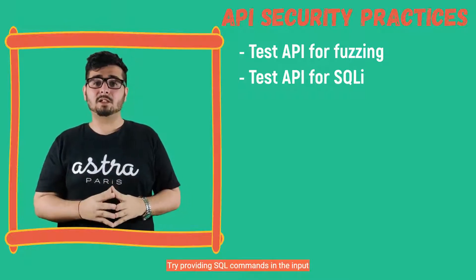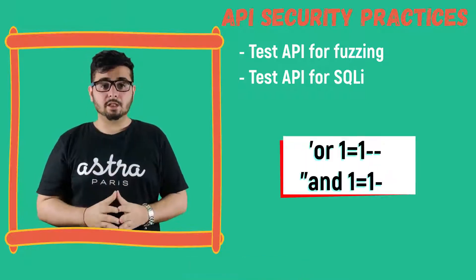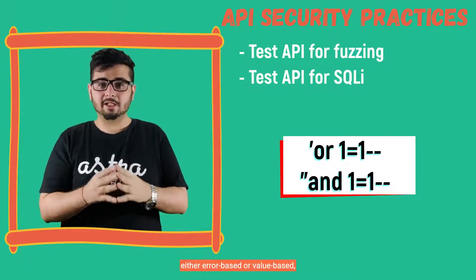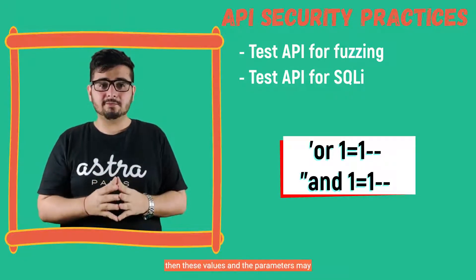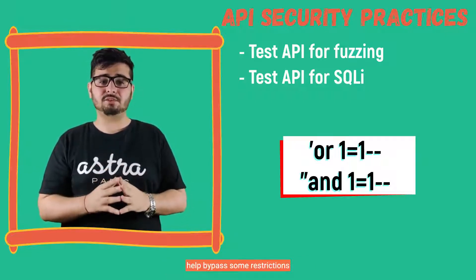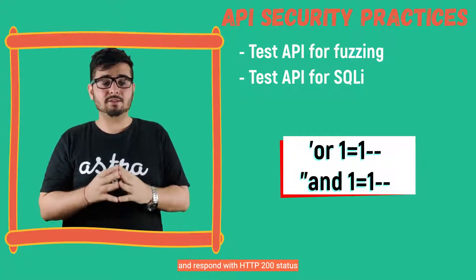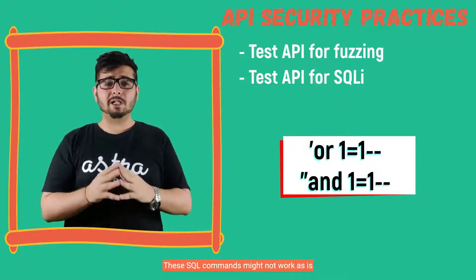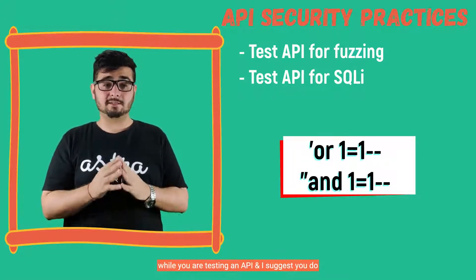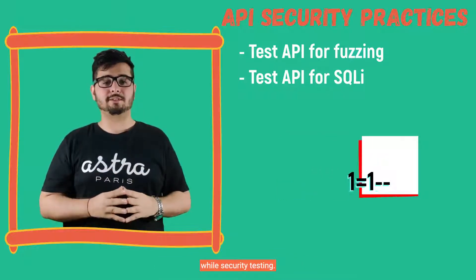Try providing SQL commands in the input like the one you see on the screen. If the API is vulnerable to SQL injection, either error-based or value-based, then these values in the parameters may help bypass some restrictions and respond with HTTP 200 status. These SQL commands might not work as-is while you are testing an API — I suggest you play with different payloads while security testing.